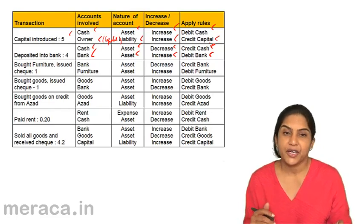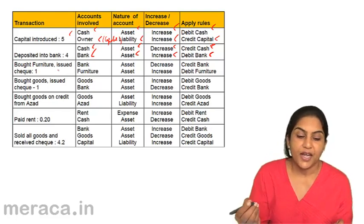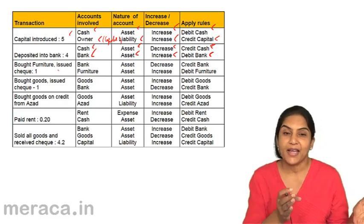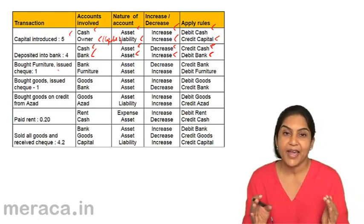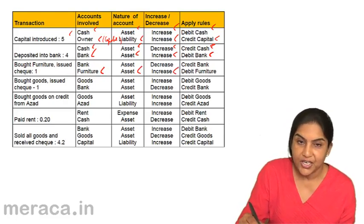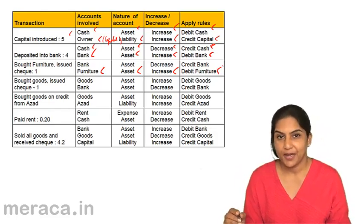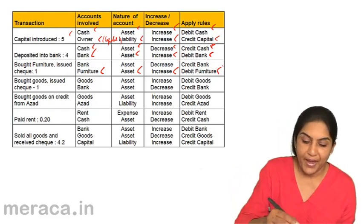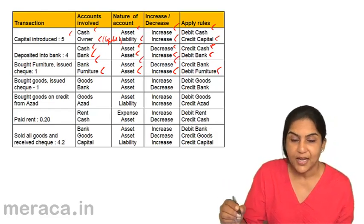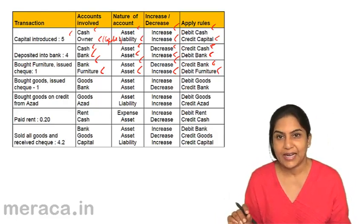Next: bought furniture and issued check. Accounts involved are bank and furniture. We bought furniture — furniture is an asset, furniture asset has increased, therefore we debit furniture. What about bank? Bank is also an asset but the bank balance has come down, therefore we credit bank.